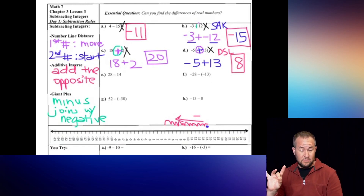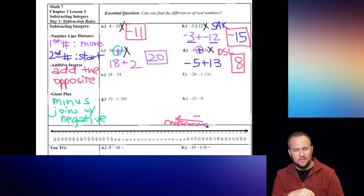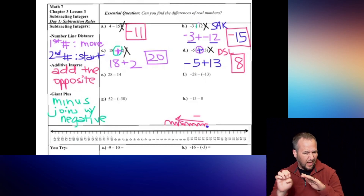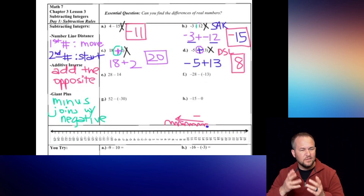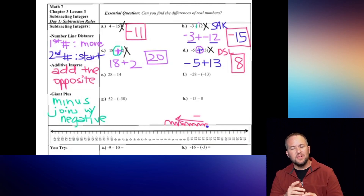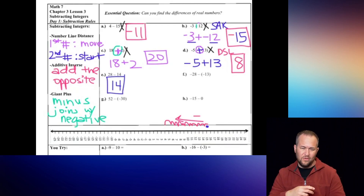Letter E actually seems kind of silly - it's 28 and I'm taking away 14, so it's back to elementary school. Whenever you have a bigger number minus a smaller number, just subtract the two. Don't make it more difficult on yourself. When I subtract those two things out, I get 14.